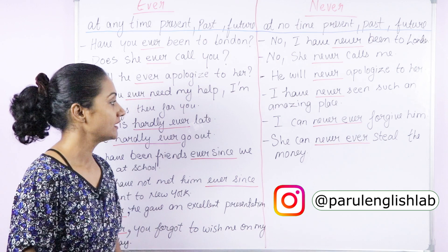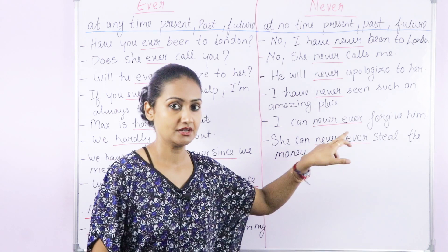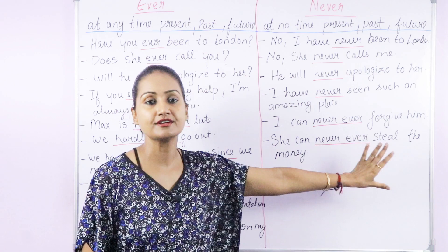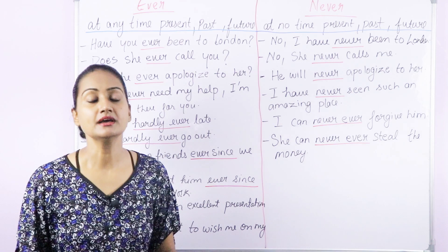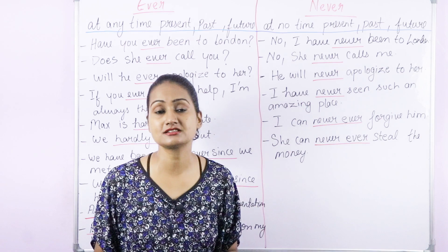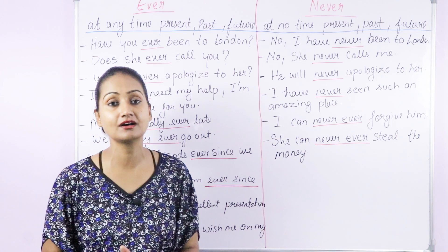We also use the phrase 'never ever,' which again means at no time, but with added emphasis. For example: I can never forgive him. And: I can never ever forgive him. The meaning is almost the same — it's just that you add more emphasis. Another example: She can never ever steal the money. How can you say he has done it? She can never do that — she can never ever steal the money.